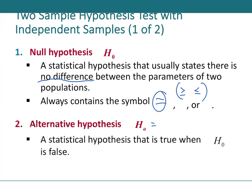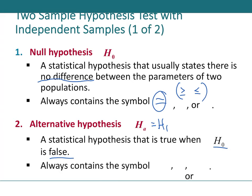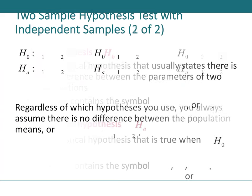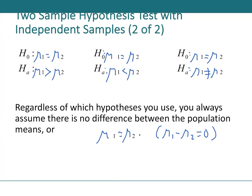H_A (or H₁) is true when H₀ is false. It will never contain the equals sign—only >, <, or ≠. This tells you the direction and the type of test. Different books use H_A or H₁; either notation is acceptable.